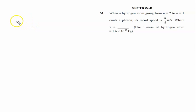When a hydrogen atom goes from n=2 to n=1, the hydrogen atom emits a photon. Of course, it will release energy.